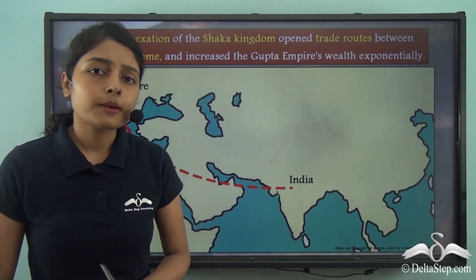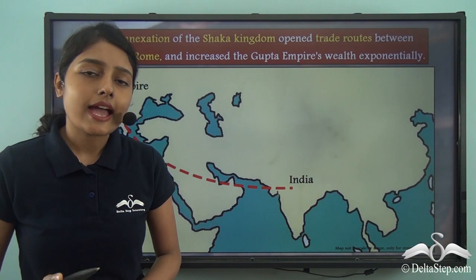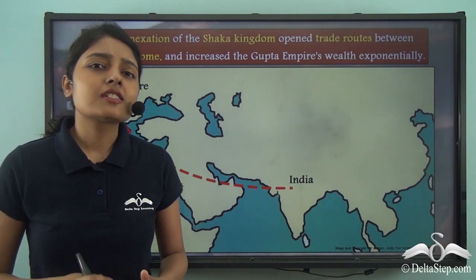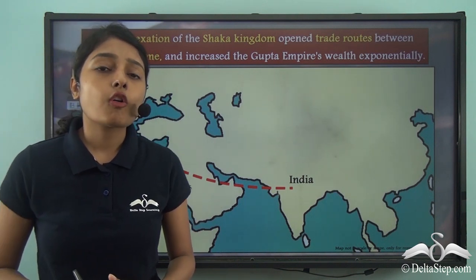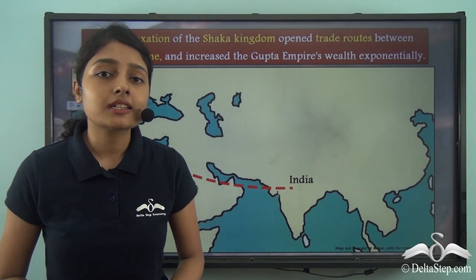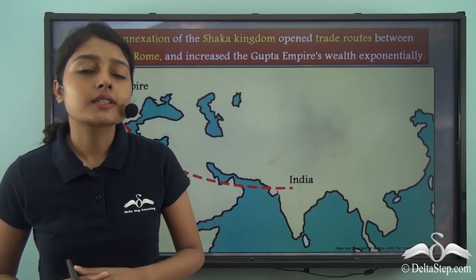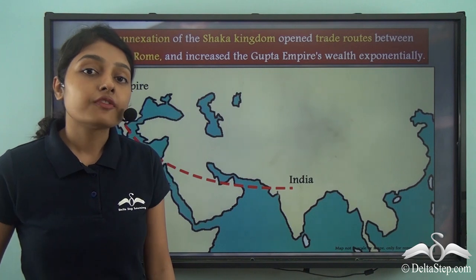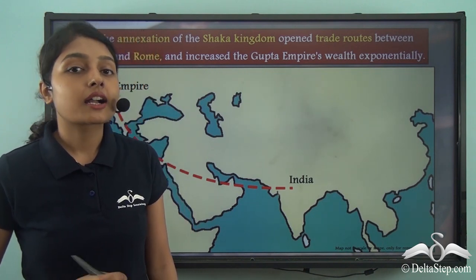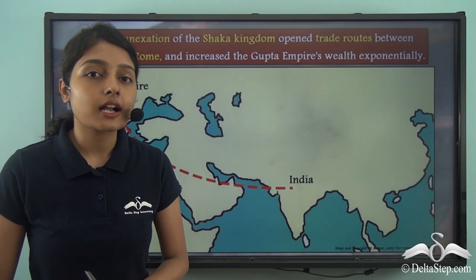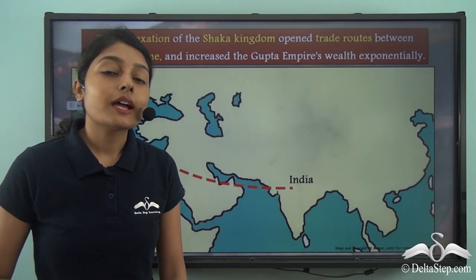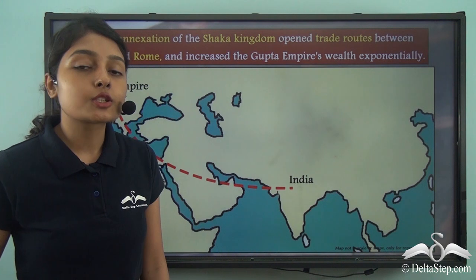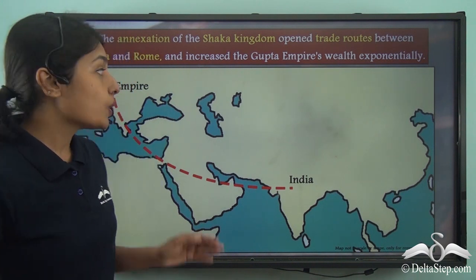Now, did Vikramaditya defeat the Shakas and annex their kingdom without any reason? Most definitely not. Because these rulers were very strategic — they were always looking for ways to expand their territories as well as to amass more resources and wealth. Likewise, Vikramaditya had strategic plans when he annexed the Shakas kingdom. By defeating the Shakas and extending the Gupta Empire to the western part of the Indian subcontinent, Vikramaditya was now able to establish trade relationships with Europe.